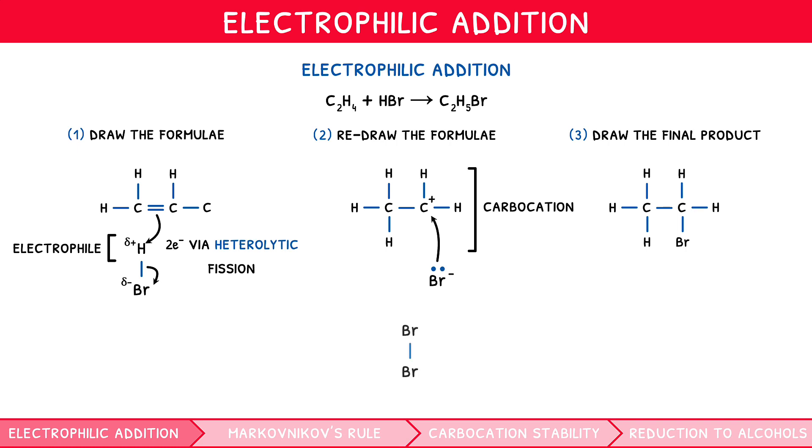However, when reacting with a diatomic halogen, since the electronegativity of both atoms is identical, there is no delta-positive hydrogen to act as an electrophile. So how does the reaction take place?